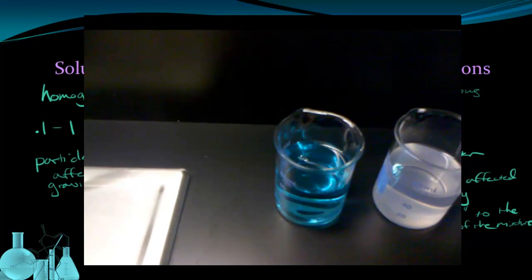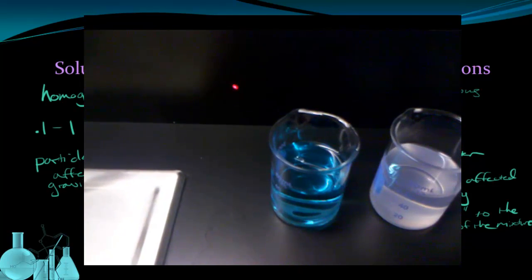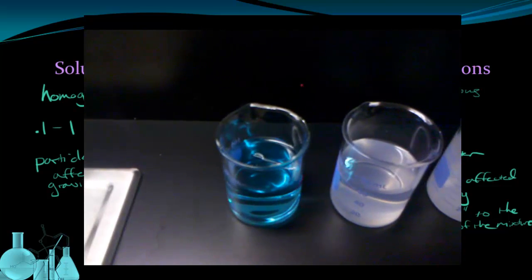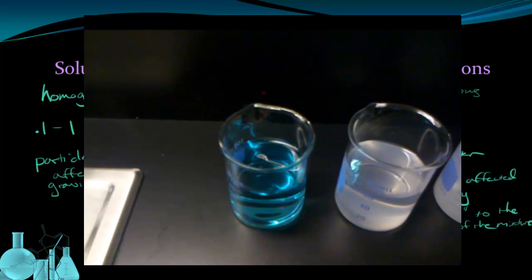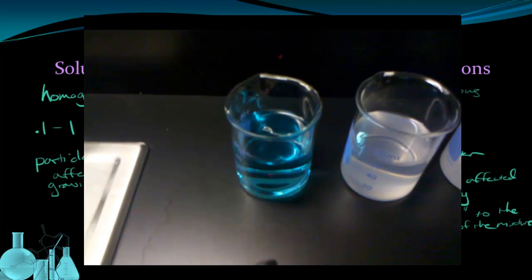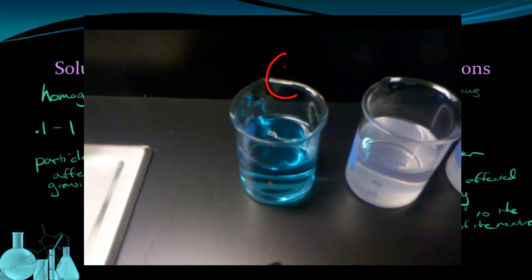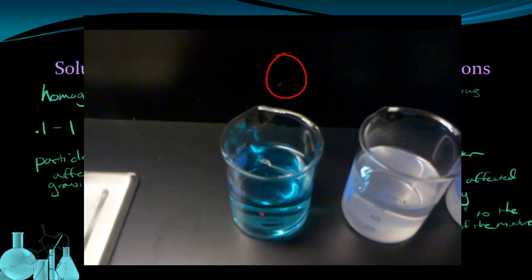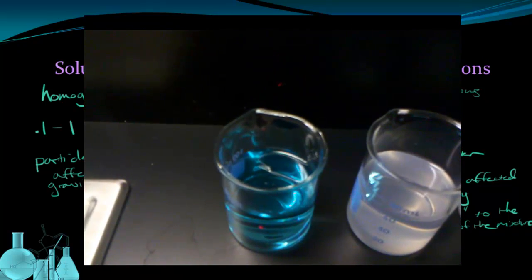First, you can see the laser pointer hitting the wall, not passing through any of the beakers, just to see what it would look like without passing through a liquid. As we move the pointer over and shine it through the solution, you can see the light dot appear on the far wall. But you don't see anything in the solution itself. The light passes right through the solution and forms a dot on the wall.